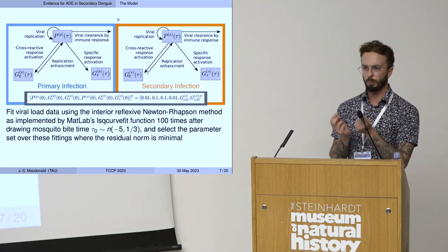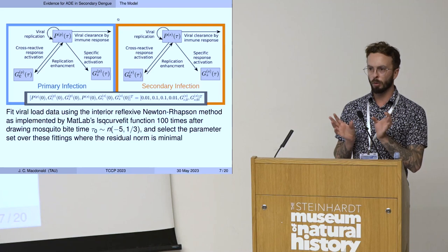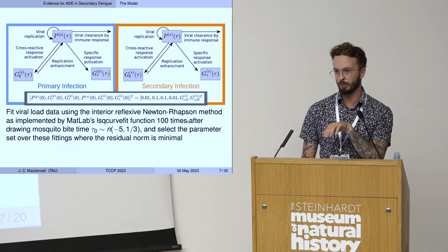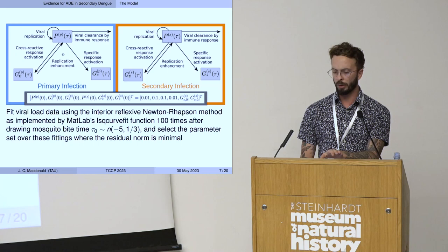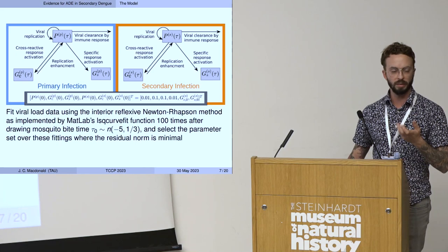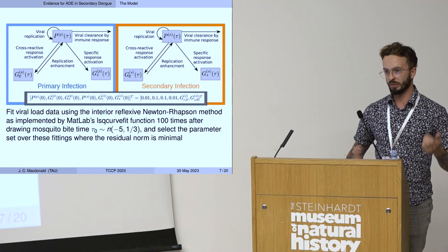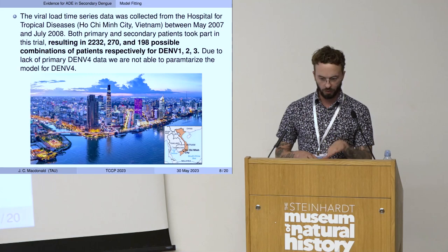To handle this, we considered combinations of primary and secondary time series for each serotype, keeping all model parameters between primary and secondary infections the same except precisely the initial secondary cross-reactive antibody level in the secondary host. The idea is: if this is all we allow to vary, can we recapitulate the data well and capture the empirically observed differences in infection?